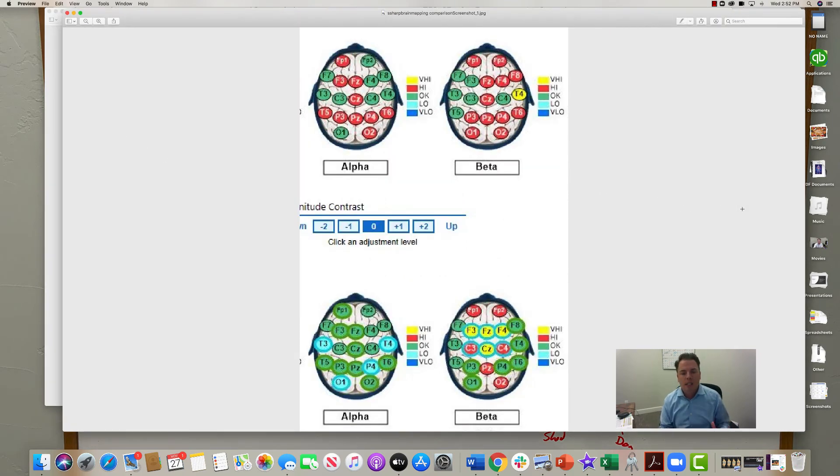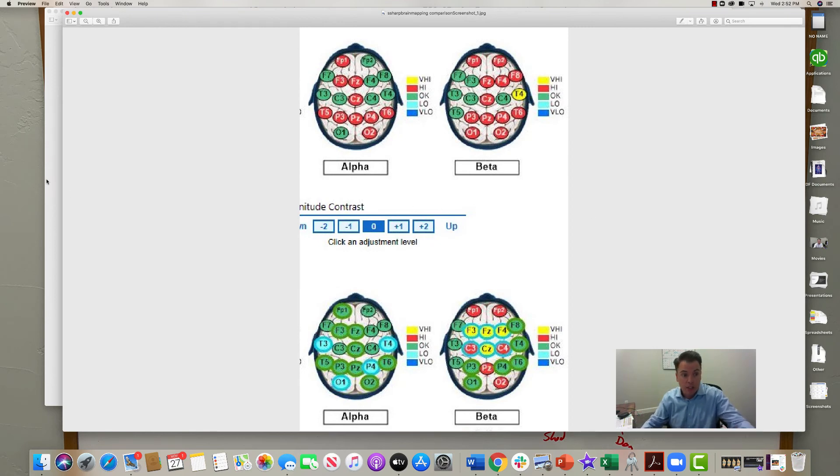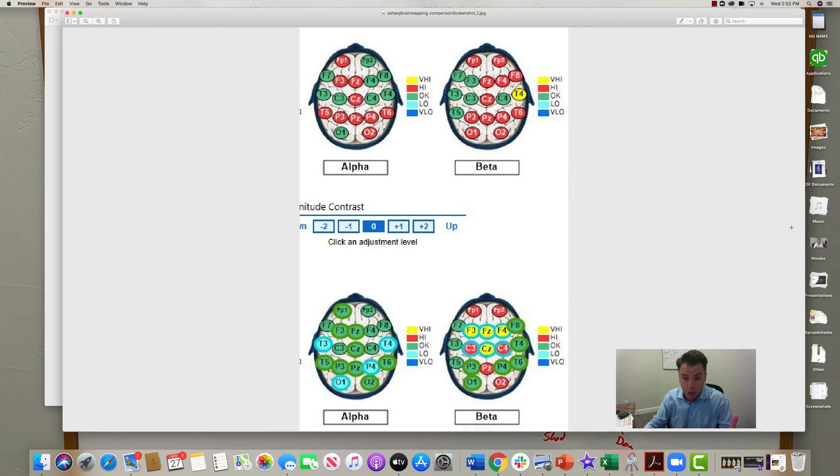This would have taken months and months of neurofeedback therapy. The individual sits in front of a movie screen and watches a movie. As their brainwaves are being read, if their brainwaves fall out of an acceptable range, the movie will gray out, which is really cool. But to get results—I never saw results like this, 58% normalization. That's huge. When I saw this, I'm like, how long did this person have to do neurofeedback?